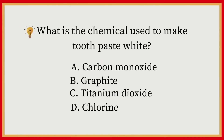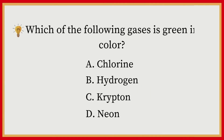What is the chemical used to make toothpaste white? A) Carbon monoxide, B) Graphite, C) Titanium dioxide, D) Chlorine. Answer: C, Titanium dioxide. Which of the following gases is green in color? A) Chlorine, B) Hydrogen, C) Krypton, D) Neon. Answer: A, Chlorine.